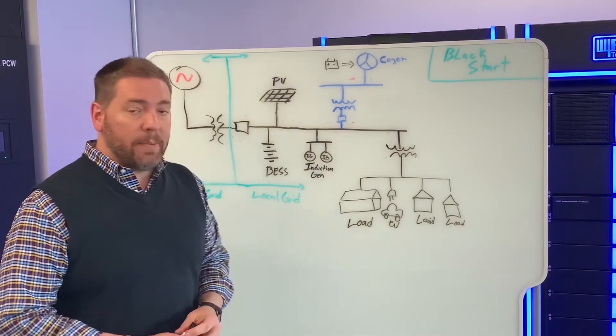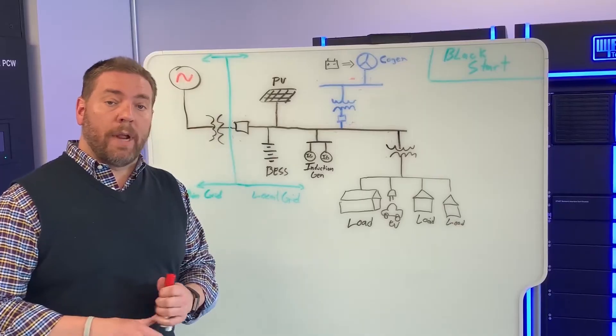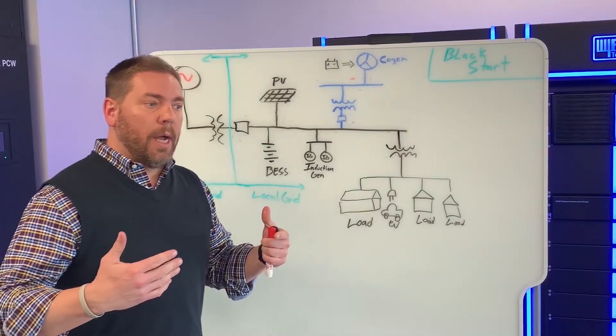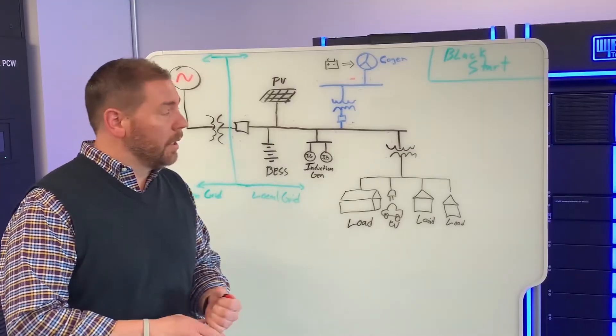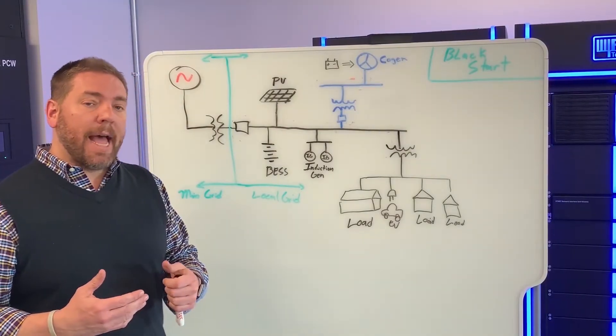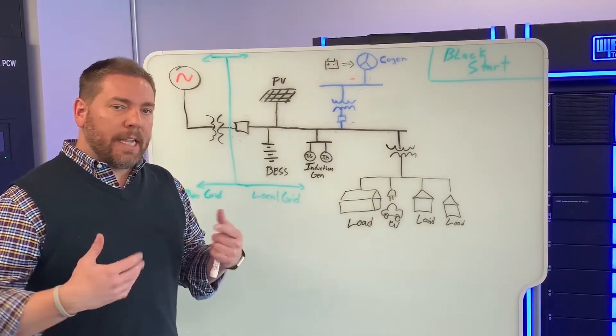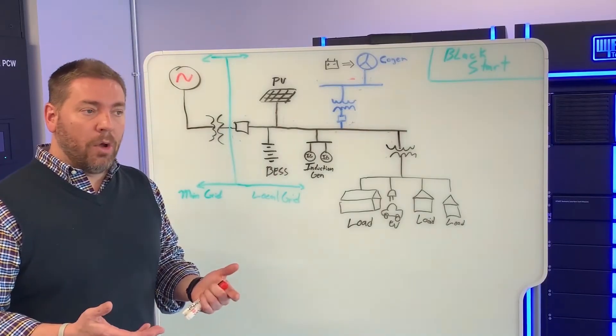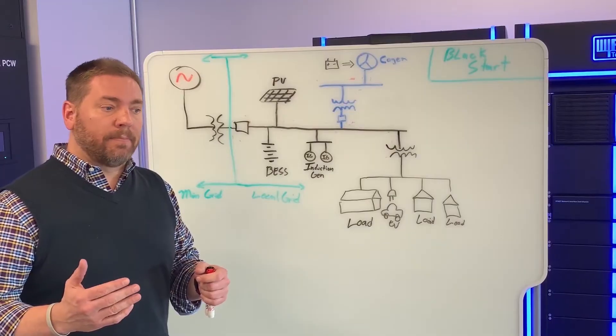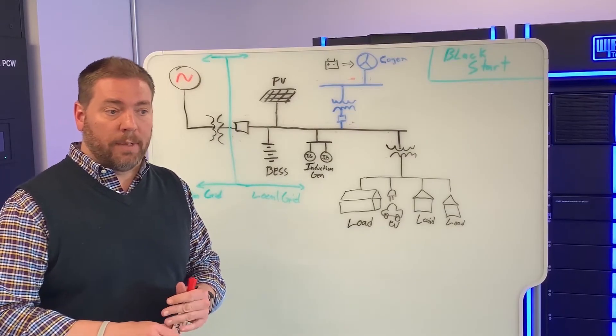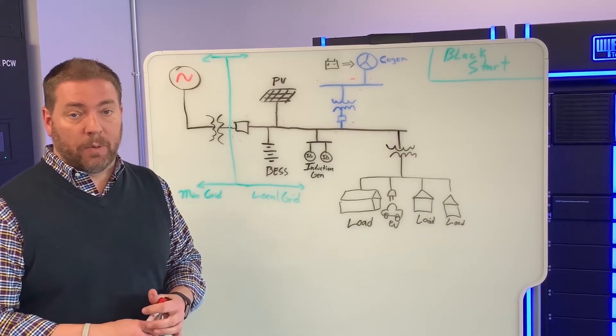First of all, the DER needs to be able to start its own ancillary services or internal process so they can start outputting power. And second is once it has started that service and is able to connect to the grid and take it on load, it needs to be able to control so that those loads do not bring the voltage or frequency down to a value that the system would collapse.